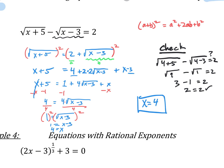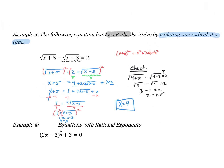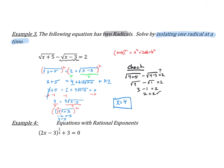So again, if you have two radicals, choose one of them to get by itself first. Square both sides — you might have to use the binomial squaring rule. And don't forget to check your answer in the end.